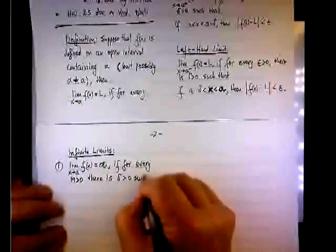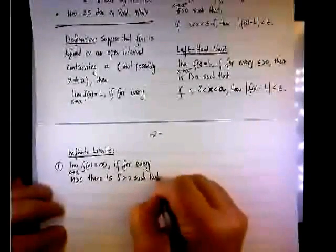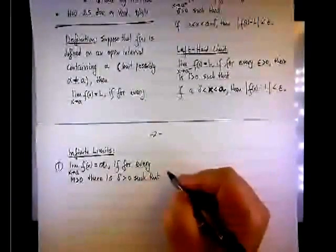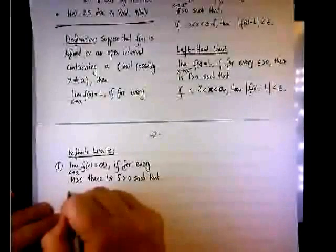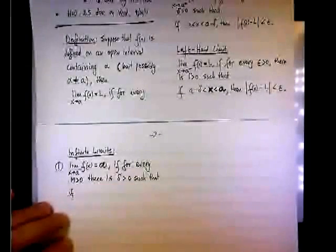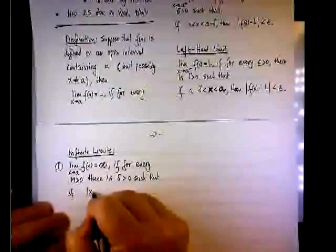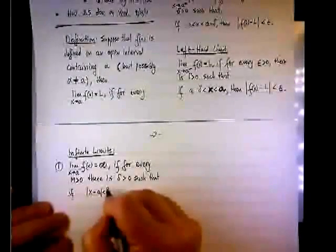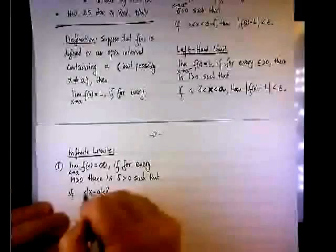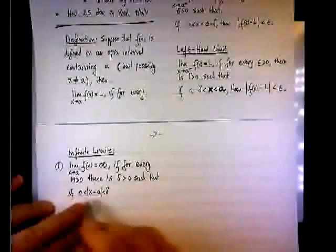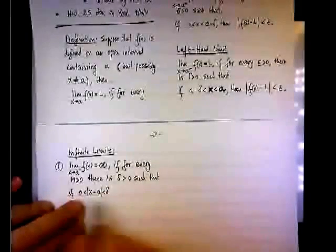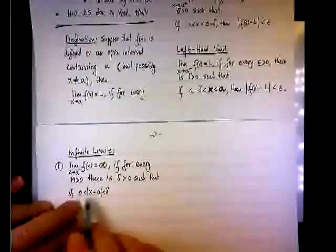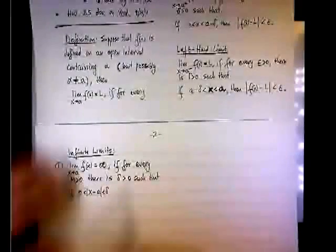And now comes the if statement. If x minus a is less than delta, but x minus a is not zero. So we are back to the treatment of delta as in the original definition, as we added here.